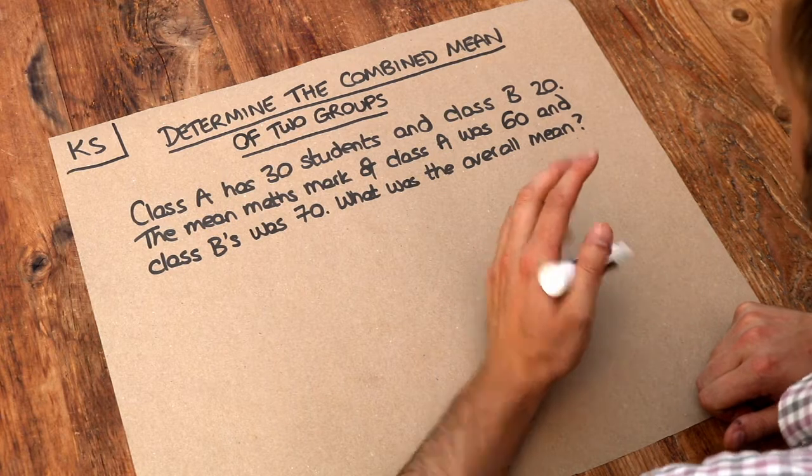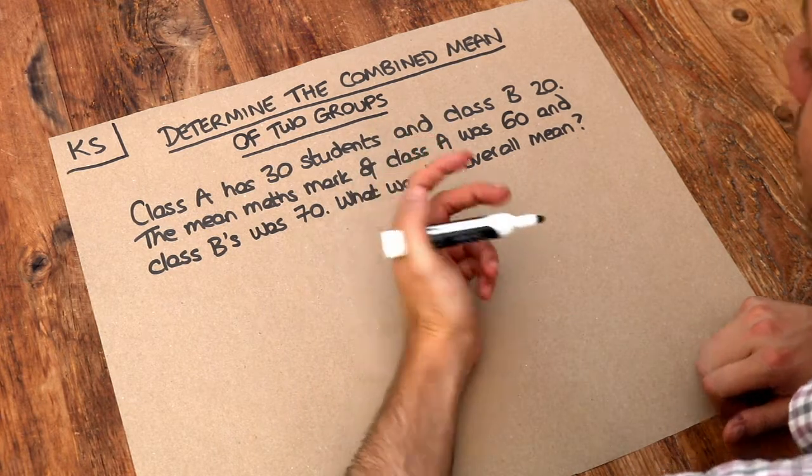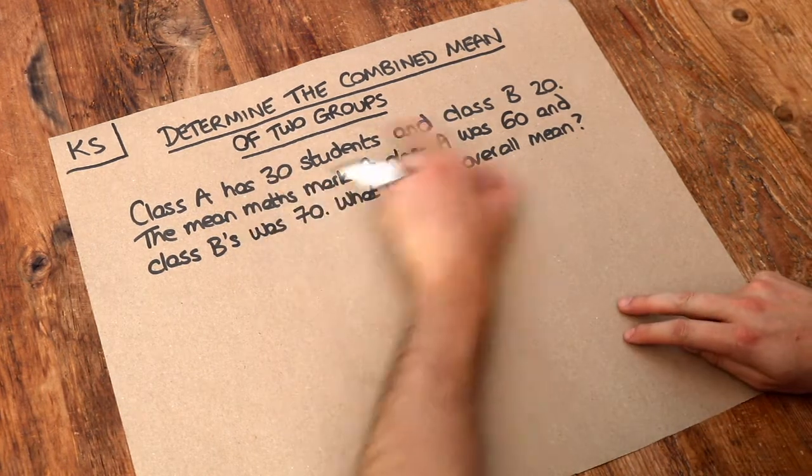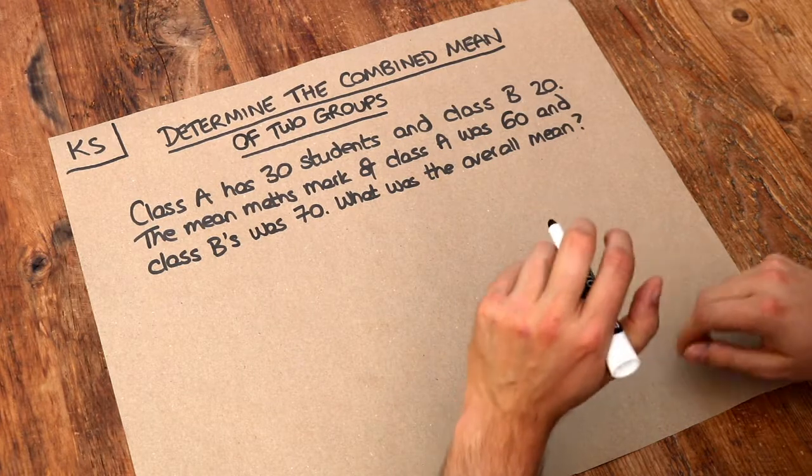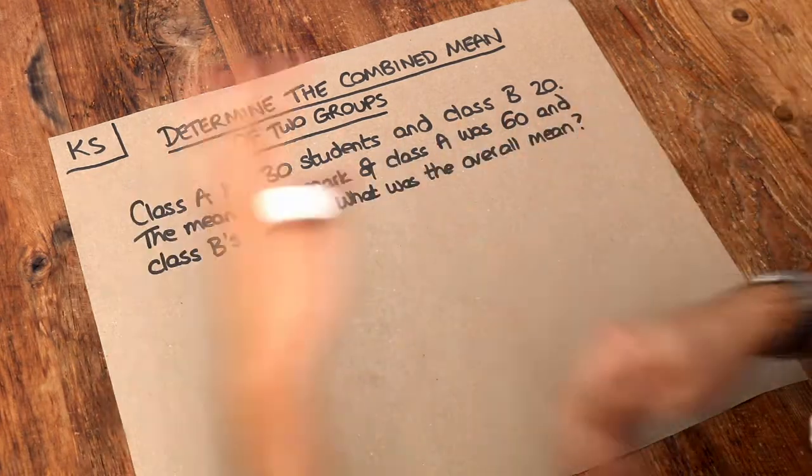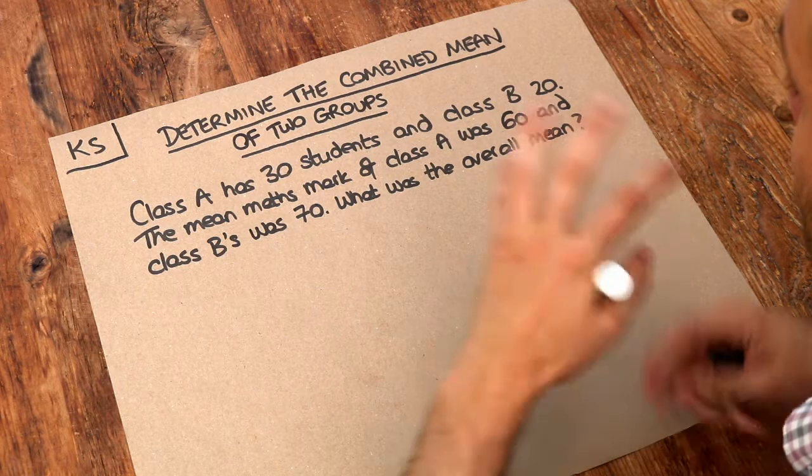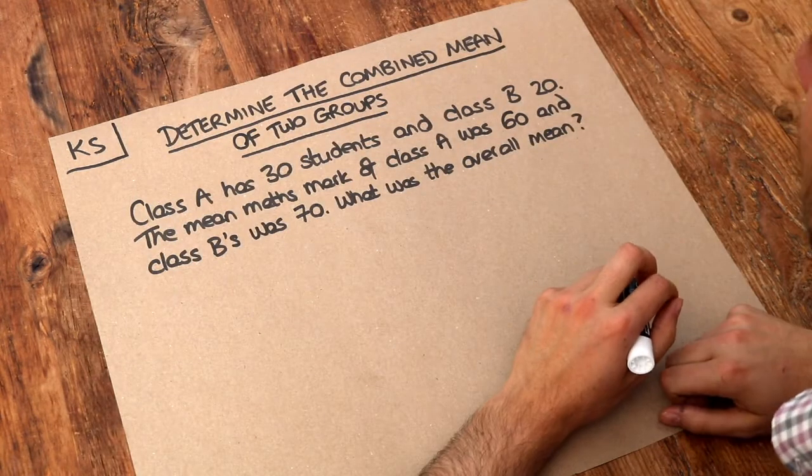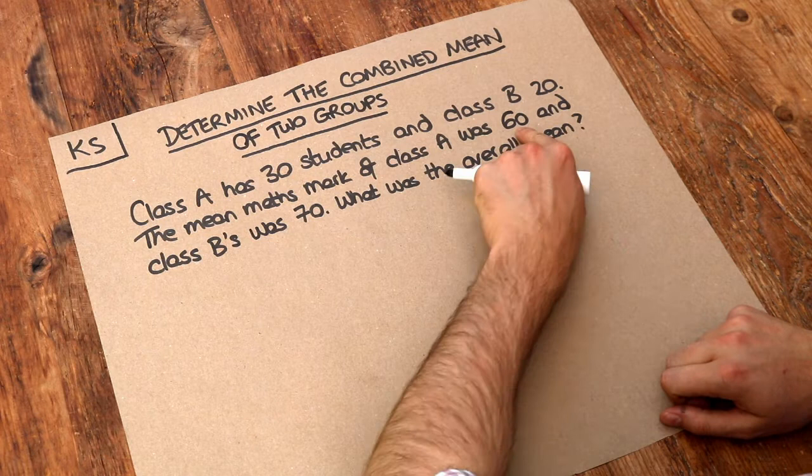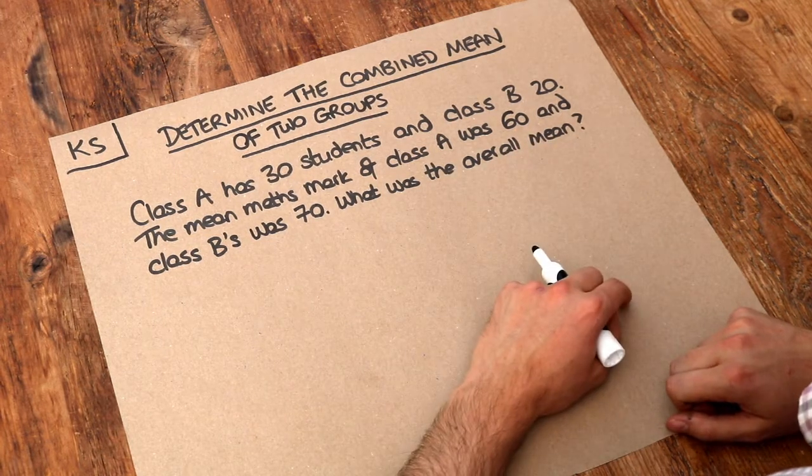Now you might think it might be halfway between 65 marks however class A is bigger than class B so the mean will be weighted towards what class A got because there's more of those people to influence the mean. So we expect the mean to be closer to 60 than it is to 70.